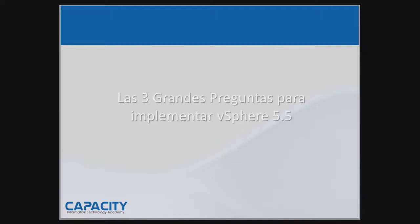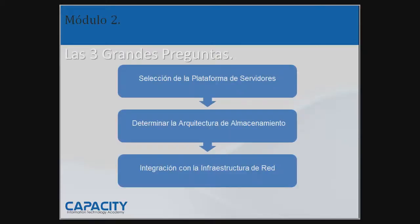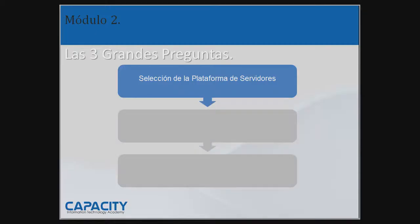¿Cuáles son las tres grandes preguntas? Vamos a explicar esas tres grandes preguntas que les acabamos de mencionar y son estas que ustedes ven en pantalla: selección de la plataforma de servidores, determinar la arquitectura de almacenamiento y determinar la integración con la infraestructura de red. En nuestra presentación estaremos mostrando qué se debe hacer y tomar en cuenta cuando estamos trabajando en la implementación correcta de vSphere. Vamos a empezar con la primera: selección de la plataforma de servidores.